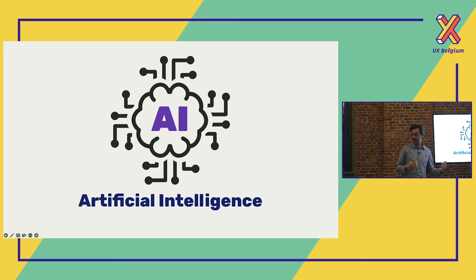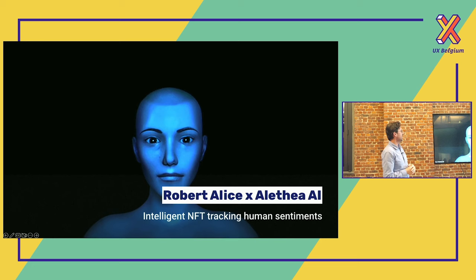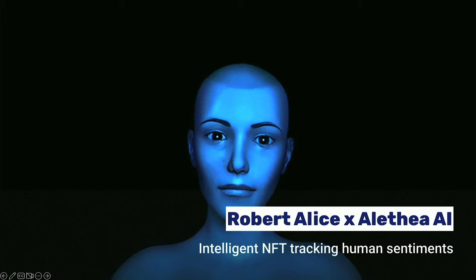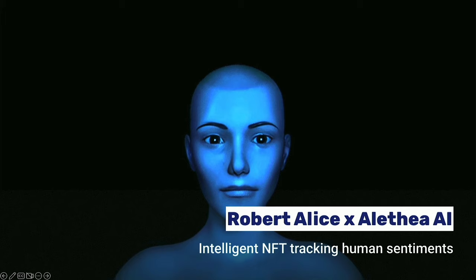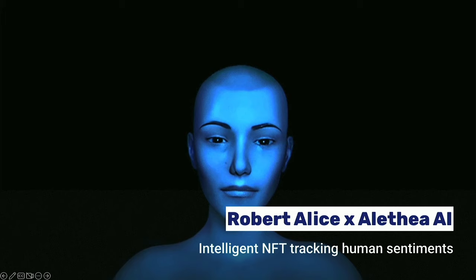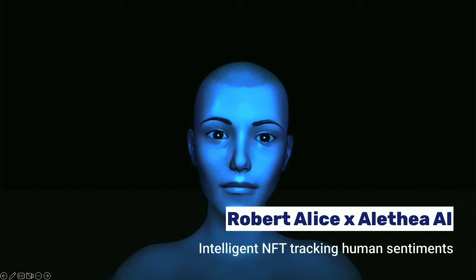There's also a lot going on with AI in Web3. Today, Robert Alice and Althea AI are making intelligent NFTs — this NFT tracks human sentiments and tries to predict how you feel. You buy this NFT and can interact with it, and your NFT will know how you feel. A lot of AI technology called 'strong AI' is trying to capture human sentiments and predict emotions. It won't be so silly to see an AI next to you as a colleague in the next couple of years.